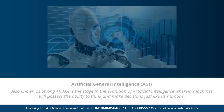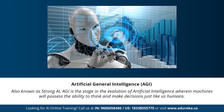Next we have artificial general intelligence, also known as strong AI. This stage is the evolution of AI wherein machines will possess the ability to think and make decisions just like human beings. There are currently no existing examples of strong AI, but it's believed we will soon be able to create machines as smart as humans. Strong AI is considered a threat to human existence by many scientists, including Stephen Hawking, who quoted that the development of full artificial intelligence could spell the end of the human race.